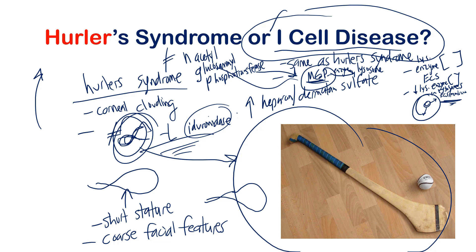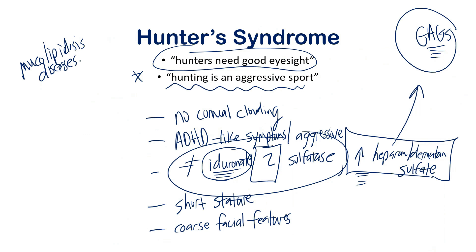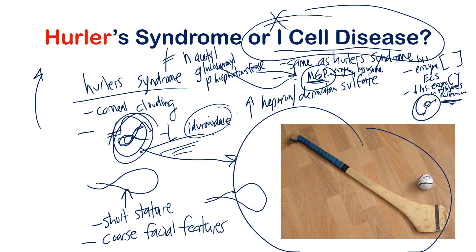Because all lysosomal enzymes are misrouted, I-cell disease causes widespread lysosomal dysfunction. It's critical to distinguish I-cell from Hurler syndrome — they're clinically very similar. Key recap: Hunter syndrome has no corneal clouding and ADHD-like or aggressive symptoms. Hurler syndrome has corneal clouding but no aggression. I-cell disease has the same presentation as Hurler but is distinguished by the mannose-6-phosphate mechanism and elevated extracellular lysosomal enzymes.